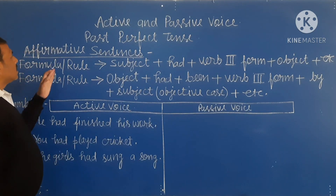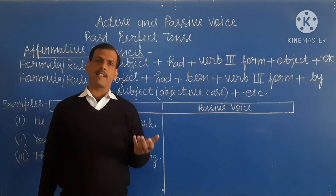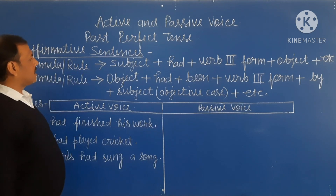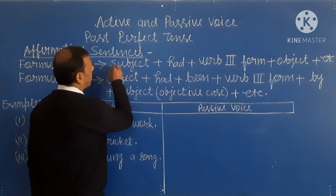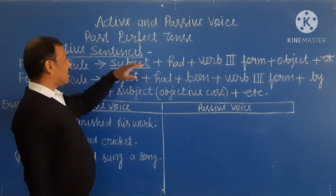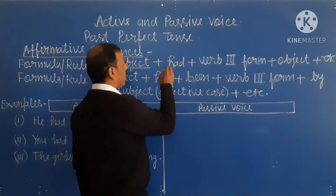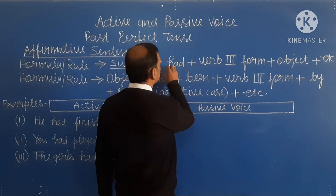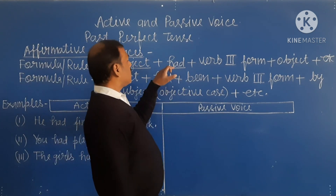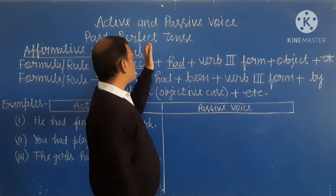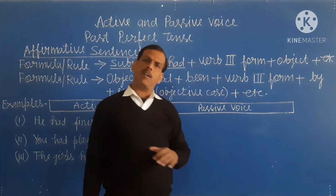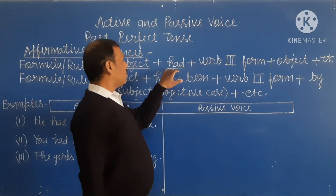An affirmative sentence is the simple sentence. The formula and rule of the affirmative sentence: first of all, we write the subject of the sentence. After the subject, we write 'had'. In present tense we write 'has' or 'have', but in past tense we use only 'had' for both singular and plural.